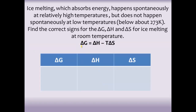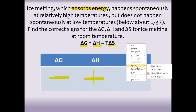Now let's find the sign — plus or minus — for delta G, delta H, and delta S for ice melting at room temperature. We know that ice melting at room temperature is spontaneous, so it decreases free energy and delta G is negative. We also know that it absorbs energy, so delta H is positive. To find delta S, we can either look at the equation or think about what's physically happening.